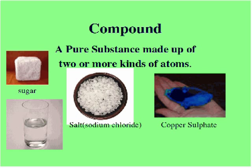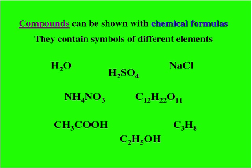A compound is a substance formed when two or more chemical elements are chemically bonded together. Elements in any compound are always present in fixed ratios. Compounds can be shown with chemical formulas. They contain symbols of different elements and the elements are always in the same ratio.